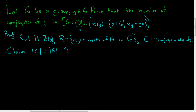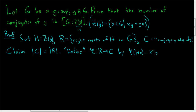Define — in quotes, because we will have to show it is well-defined — phi from R to C by the following: we take phi of a right coset Hx and send it to the element x⁻¹gx, which is certainly an element in the conjugacy class of g. It's certainly conjugate to g by definition of conjugacy classes.